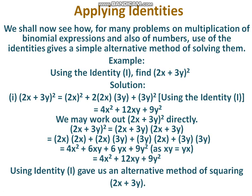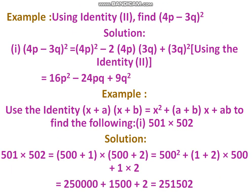Using identity 2, find (4p minus 3q) whole square. Here, 4p minus 3q is in the form of (a minus b) whole square, where a equals 4p and b equals 3q. (a minus b) whole square equals a squared minus 2ab plus b squared. Therefore: (4p minus 3q) whole square equals (4p) squared minus 2 into 4p into 3q plus (3q) squared, which gives 16p squared minus 24pq plus 9q squared.